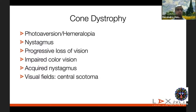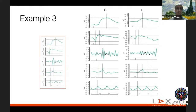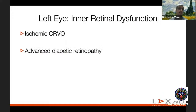No test should be taken in isolation — similar results can be seen in various conditions, so correlate with fundus morphology, patient age, and symptomatology. In a third example, the right eye ERG appears normal, the left eye shows an attenuated b-wave in the scotopic ERG with normal photopic ERG, and clearly diminished oscillatory potentials in the left eye compared to the right — consistent with inner retinal circulation disorder: ischemic CRVO or advanced diabetic retinopathy.